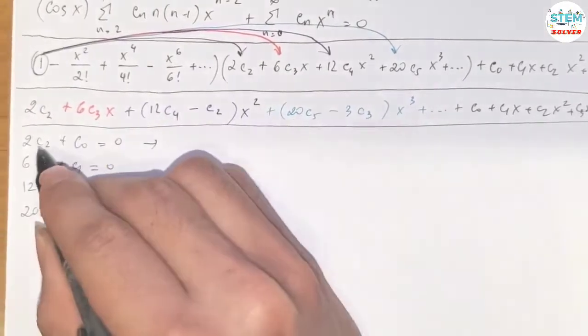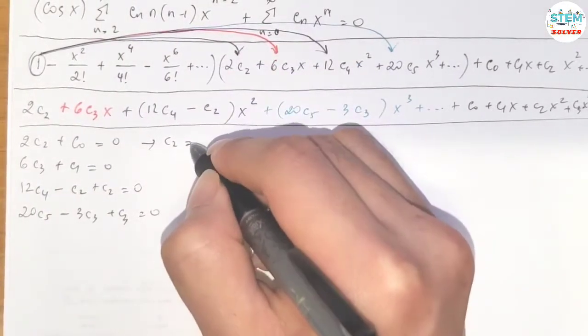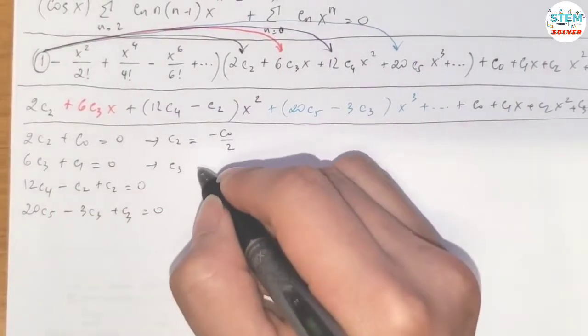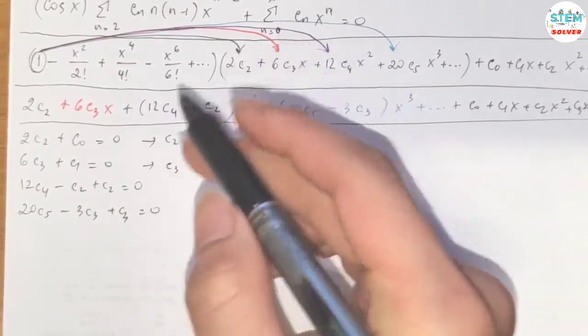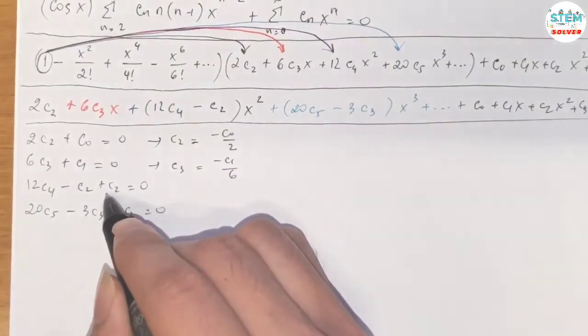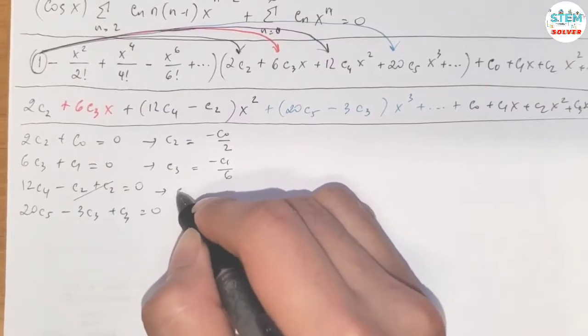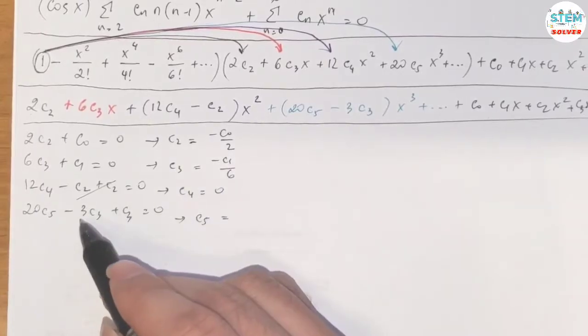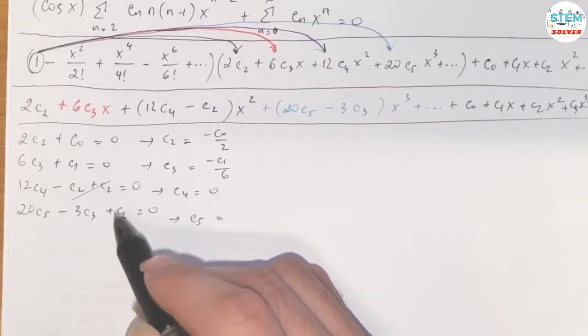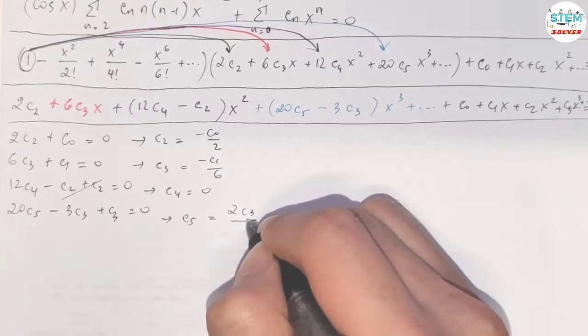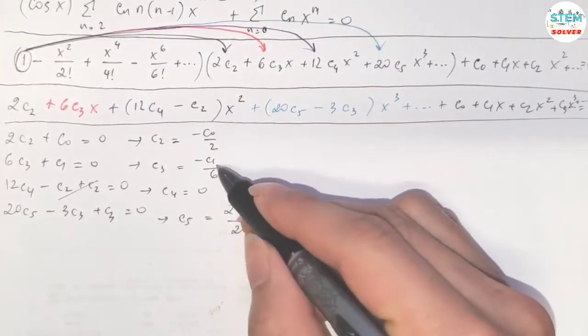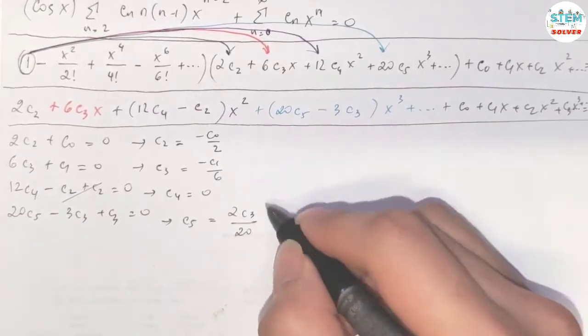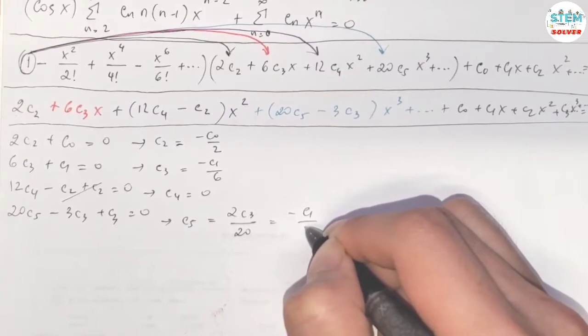For this one, I'm gonna start from the biggest c, which is c_2, then I get negative c_0 over 2. For this one, I'm gonna solve for the biggest c, which is c_3, so I have negative c_1 over 6. For this one, we have negative c_2 plus c_2, so we solve out and that is c_4 equals 0. For this one, solve for c_5. We have negative 3c_3 plus c_3, which is negative 2c_3, so 2c_3 over 20. And what is c_3? C_3 is negative c_1 over 6. So simplify this: 1 tenth times negative c_1 over 6, which is negative c_1 over 60.